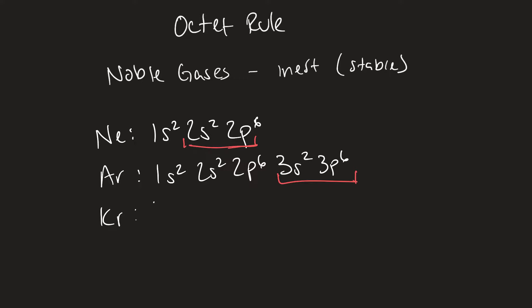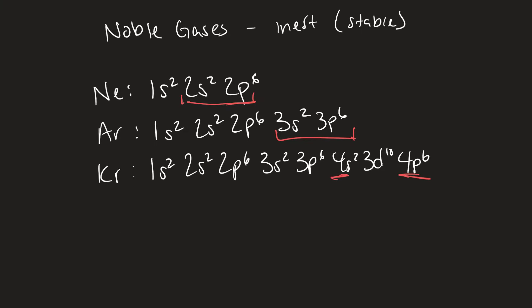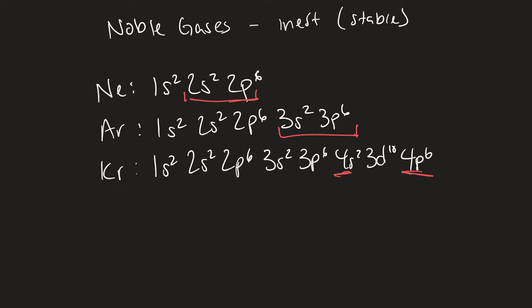This is also true when we look at krypton: 1s2, 2s2, 2p6, 3s2, 3p6, 4s2, 3d10, 4p6. Once again, you have a valence shell that consists of eight electrons — a full shell. All other atoms would typically lose or gain electrons to achieve such a valence shell, and the rule of thumb is they will do so with the least number of electrons possible.